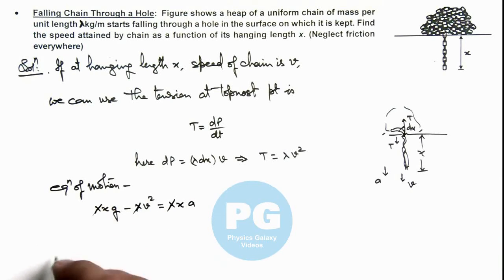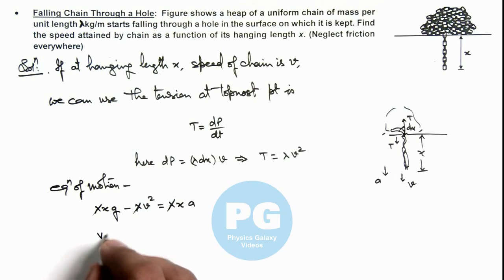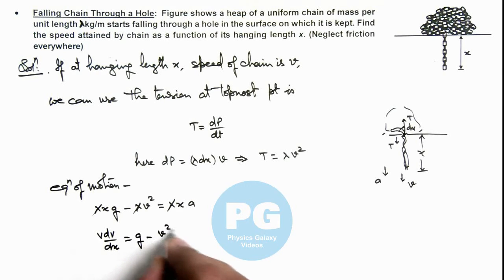Lambda cancels out, and we can substitute ay as v dv/dx. This gives v dv/dx equals g minus v squared over x.